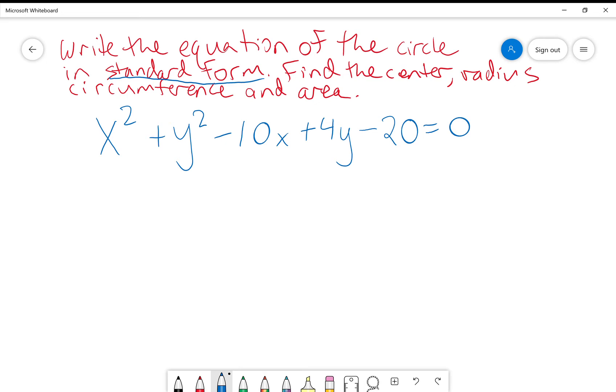Standard form is that x minus h squared plus y minus k squared equals r squared. Then we want to find the center, radius, circumference, and area of this particular circle.